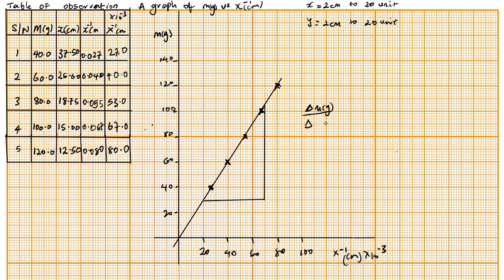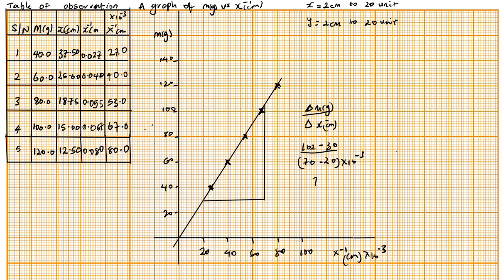divided by change in x inverse, which is in centimeters. So we trace our two points: m gives 102 minus 30, and x inverse gives 70 minus 20. Remember to put your values in standard form. This gives us 72 divided by 50 times 10 to the power of minus 3.